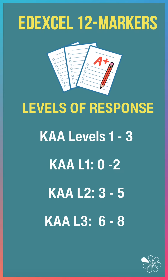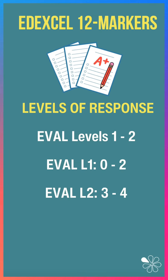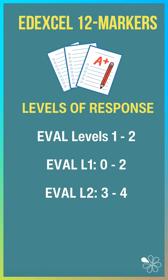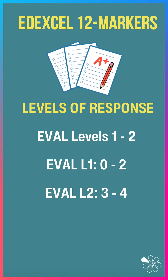Level 1 gets you between 0 and 2, level 2 between 3 and 5. If you can get to a level 3 answer in your two KA paragraphs, you get between 6 and 8 marks. The evaluation is marked the same as with a 10 marker — two levels: 0 to 2, or 3 to 4 if you want to get to level 2.